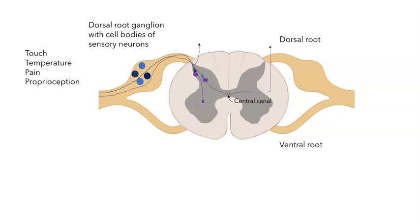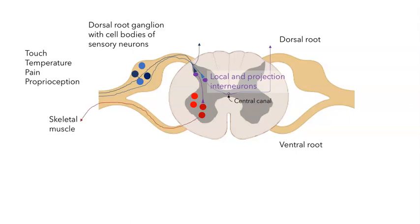Other sensory neurons come in, make synapses onto interneurons, and those interneurons cross and then enter a white column and project up to the brain. The dorsal horn is filled with local and projection interneurons. In the ventral horn we find motor neurons: some innervate skeletal muscle fibers, while others exit the spinal cord to travel to autonomic ganglia, ultimately controlling heart rate, breathing, digestion, and other visceral functions.